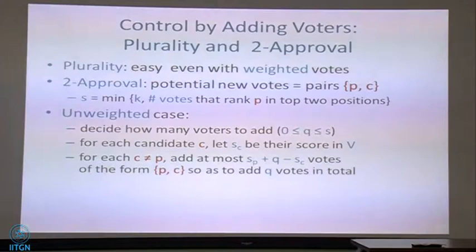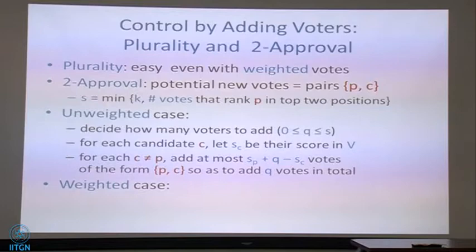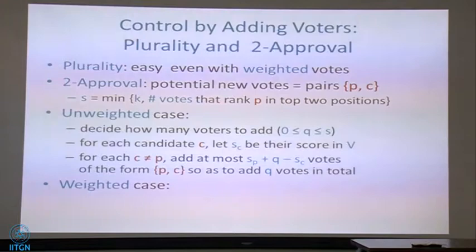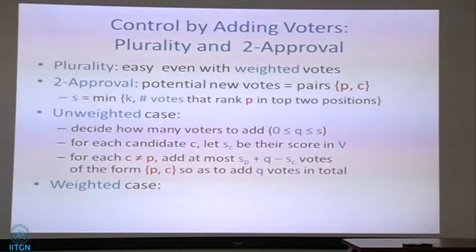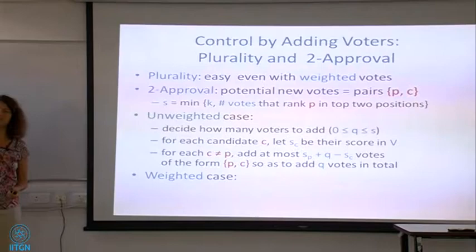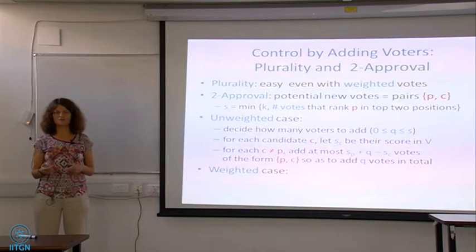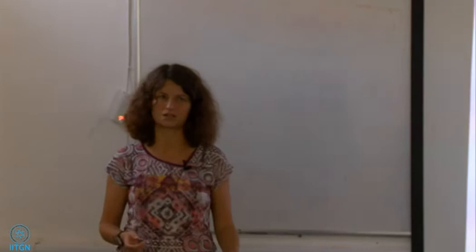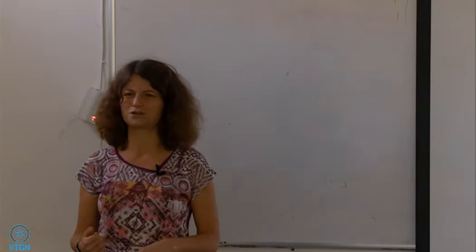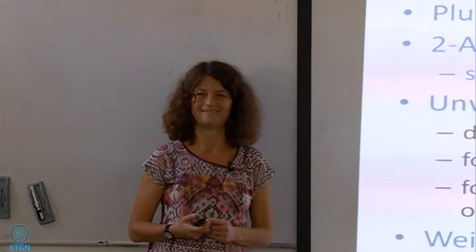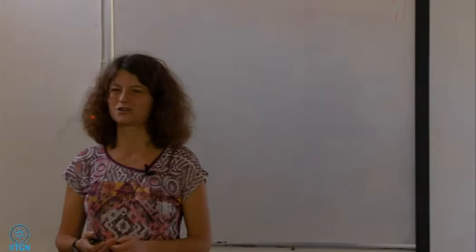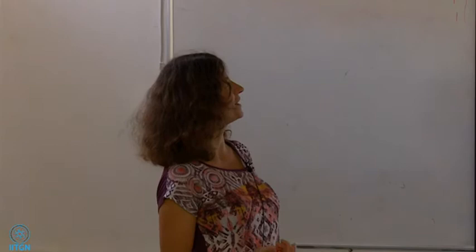The weighted case becomes tricky. You want to bring in heavy votes that help your candidate P. You may have votes of type P-A ranking P first, A second, and votes of type P-B ranking P first, B second. A and B may already have some weight, so when bringing in those voters you have to balance carefully so neither A nor B get too much extra weight. That sounds NP-hard by reduction from partition. This actually reminds us of something seen before — coalitional manipulation. We've seen a very similar argument in the context of coalitional manipulation. In fact, control by adding voters and coalitional manipulation are very similar.